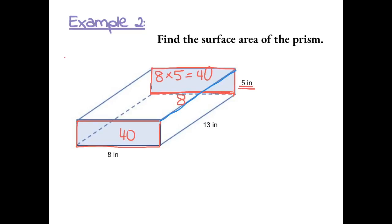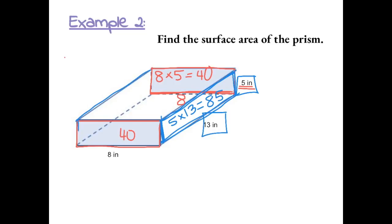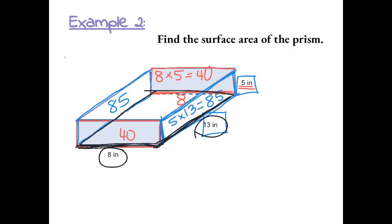Next, we have the border along the side. This area has dimensions 5 by 13, so the area is 5 times 13, which is 85. And we know that the opposite side is also going to be 85. The last part is the bottom of the box, which has dimensions 8 by 13, so 8 times 13 gives us 104.